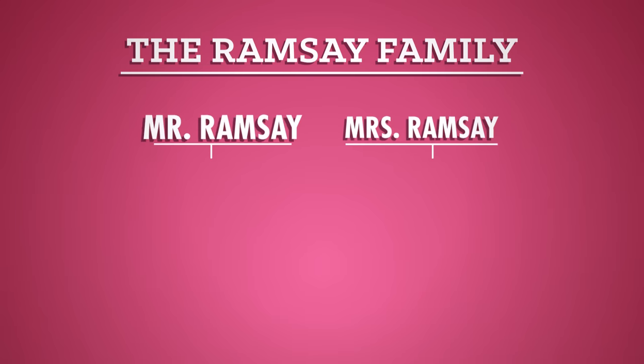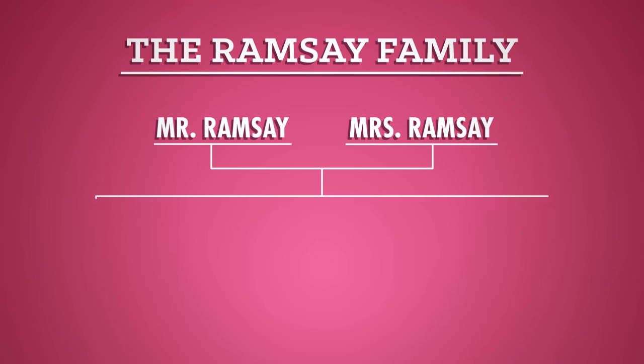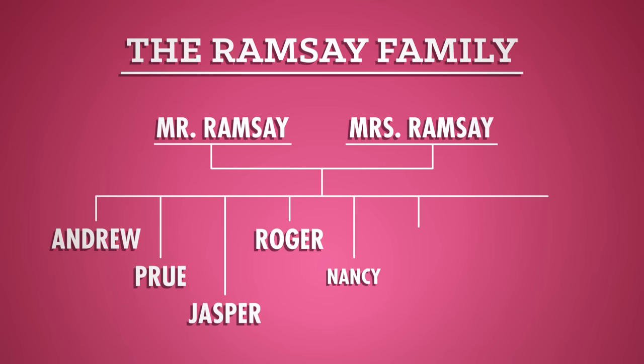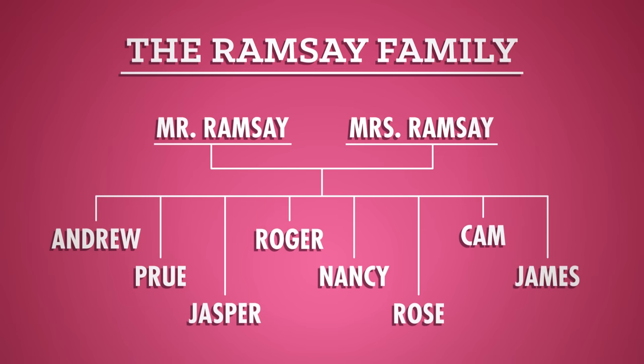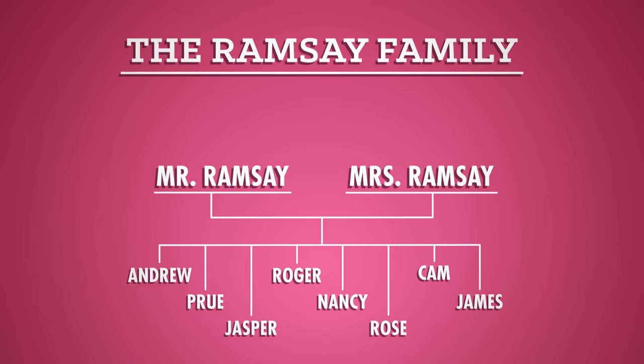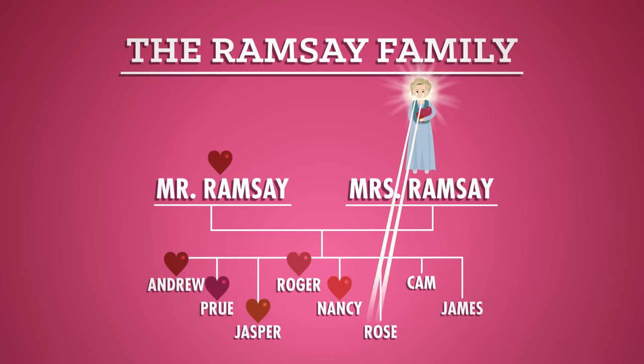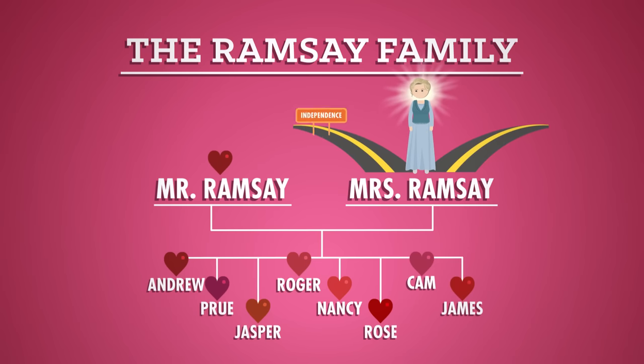First, we have Mr. and Mrs. Ramsay, the parents of eight children: Andrew, Prue, Jasper, Roger, Nancy, Rose, Cam, and James. I hope you got that because there will be a quiz later. Mrs. Ramsay has kind of a mother goddess aura, even when she's worrying about how much it will cost to fix the greenhouse and whether her guests will like the beef stew. Actually, liking the beef stew is one of the real nail biters in this novel. Mrs. Ramsay is loving and sympathetic and an acute observer of her family and guests. Sometimes her work as a wife and mother and hostess exhausts her, but she does it anyway because that's what women are supposed to do. Mrs. Ramsay embraces conventional gender roles, believing that marriage and childbirth are the only really appropriate path for a woman to take.